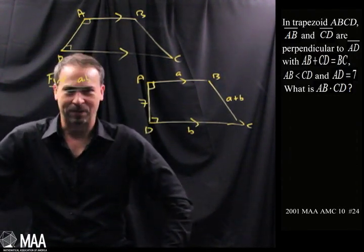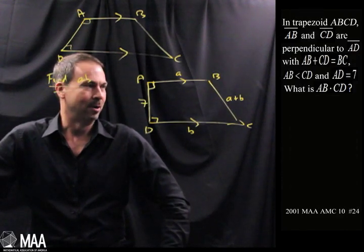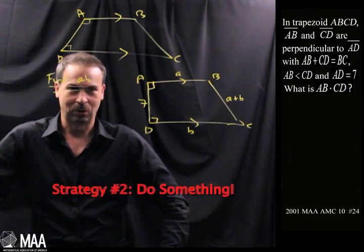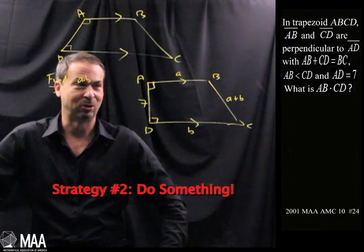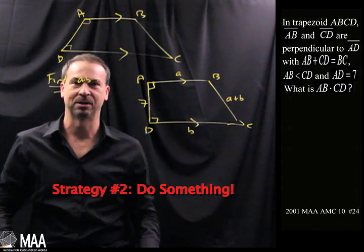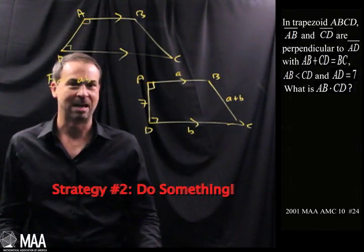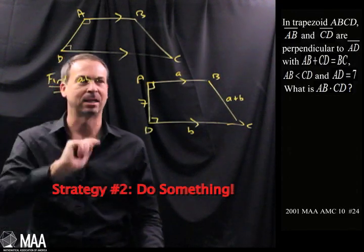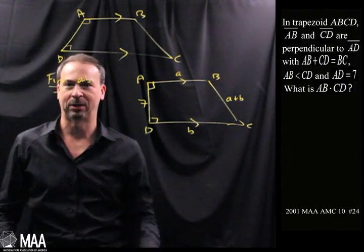Now I've got this question in my head. I've done something, which is good, because that's a strategy in and of itself. Strategy number two is do something. At least I've just set up the question and taken it in. Now I have to really do something and try to get somewhere. How am I going to get the product AB from this picture?